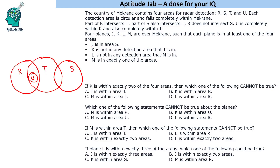J is in area S, which means J can be in the S-only region or in the overlapping S-and-T region. K is not in any detection area that J is in, so K cannot be in area S. If J is in the S-only portion, then K can be elsewhere.